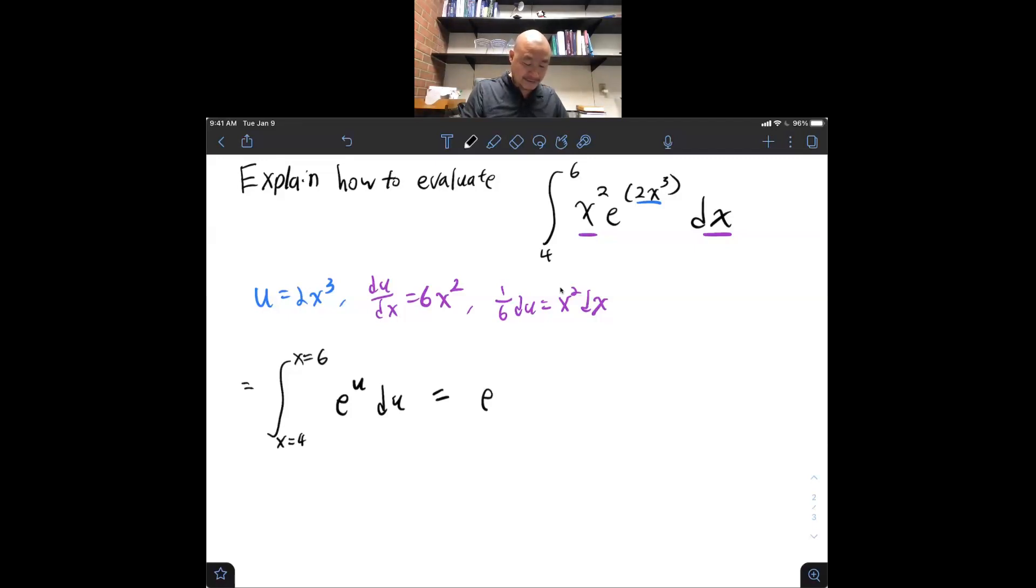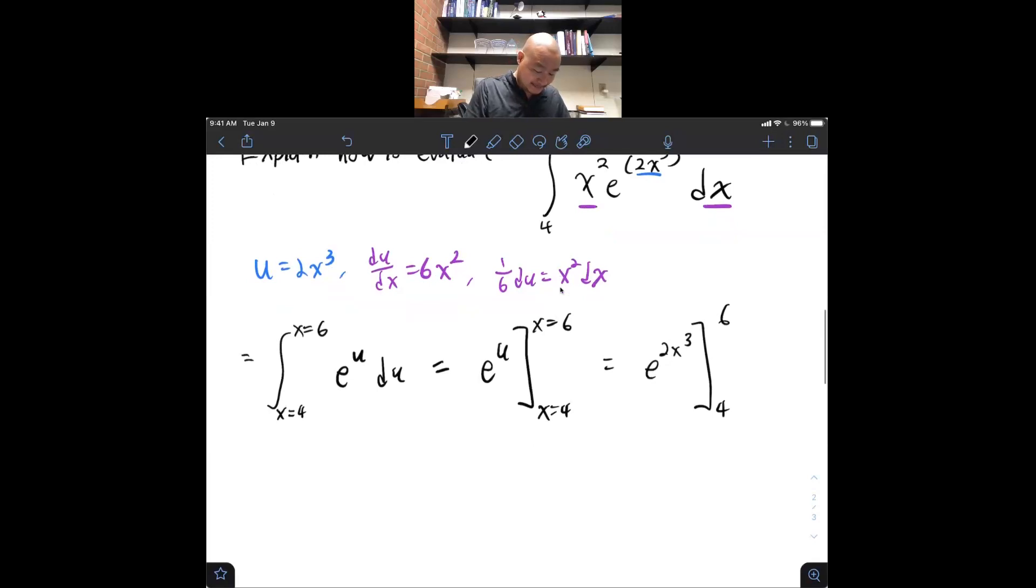Now, the antiderivative of e to the u is itself plus c. And we can run this bound from x equals 4 to x equals 6. And, remembering that my original u was 2x cubed, I can rewrite that as e to the 2x cubed. Now, as an x expression, I can just say 4 and 6. And this will give me e to the 2 times 6 cubed minus e to the 2 times 4 cubed as the value of that integral.